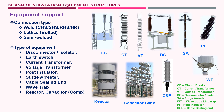A surge arrestor arrests lightning or any fault surge occurring in the substation area due to external environmental effects. PA (post insulator) is simply an insulated support. Reactor and capacitor banks are mostly used for compensation or power quality solutions. CSE (cable sealing end) is the terminal point between the overhead line and the ground cable trench. A wave trap arrests unwanted waves from telecommunications or communication networks that could disturb the substation system.